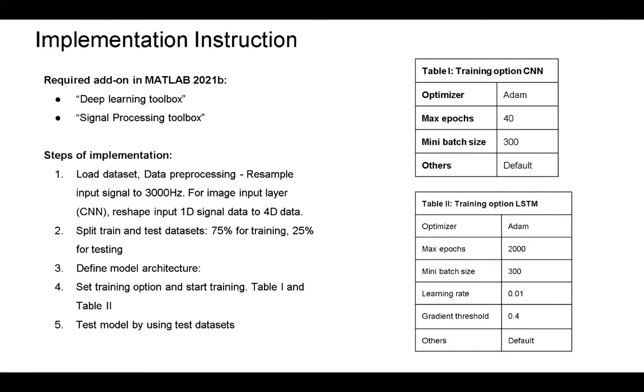For the implementation steps, the first step is to load dataset and do data preprocessing. This step contains resample frequency to 3000Hz and reshape dataset from 1D to 4D. The second step is to divide dataset into training and testing: 75% for training, 25% for testing. Then we define module architecture and set training option and start training. Table 1 and Table 2 show details of training parameters. The last step is to test module using test dataset and see if the module can remove noise from the signal.